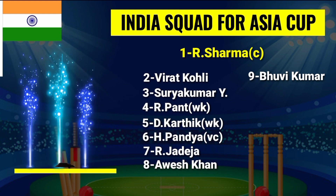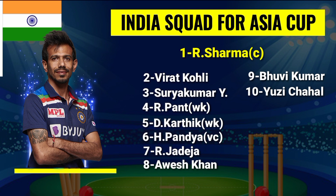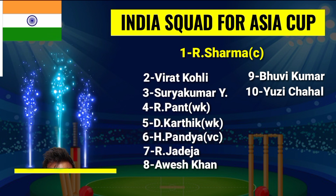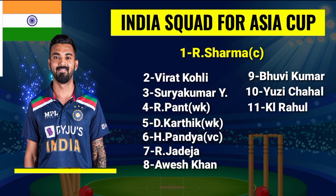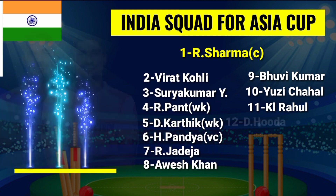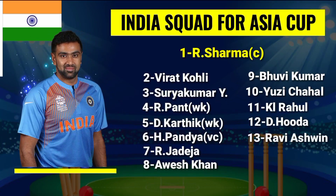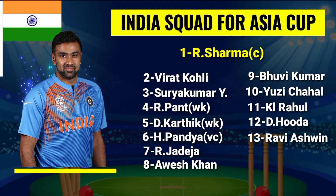9. Bhuvaneshwar Kumar – Right-arm fast bowler. 10. Yuzvendra Chahal – Right-arm leg spinner. 11. KL Rahul – Right-hand batsman. 12. Deepak Hooda – All-rounder. 13. Ravichandran Ashwin – Right-arm off spinner.